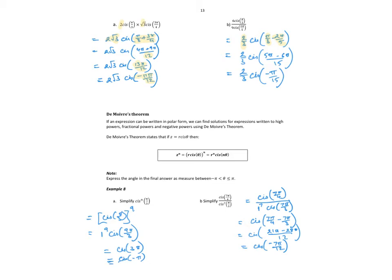Again, common denominators - we get our negative π/15.